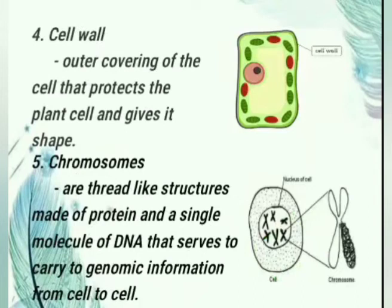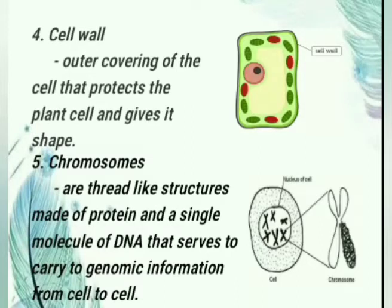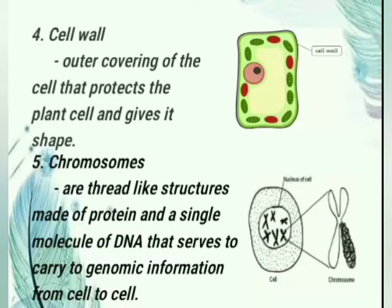The next is the cell wall — an outer covering of the cell that protects the plant cell and gives it shape. The primary function of the cell wall is to protect and provide structural support to the cell. Next, the chromosomes — a thread-like structure made of protein and a single molecule of DNA that serves to carry genomic information from cell to cell.